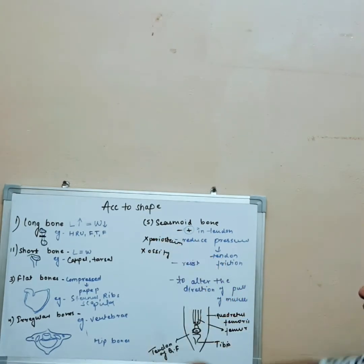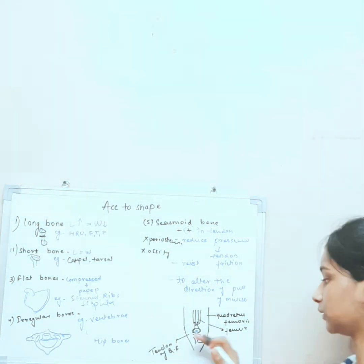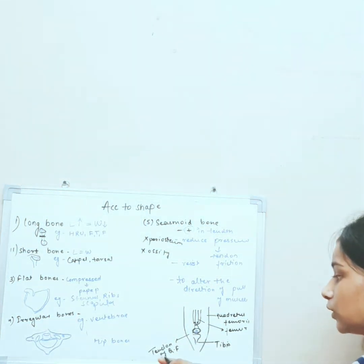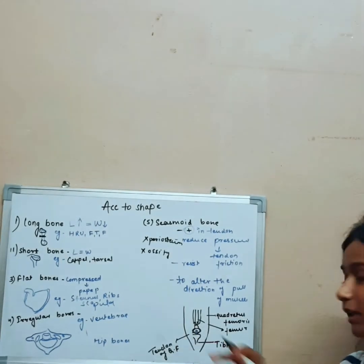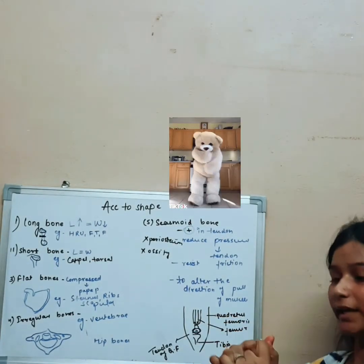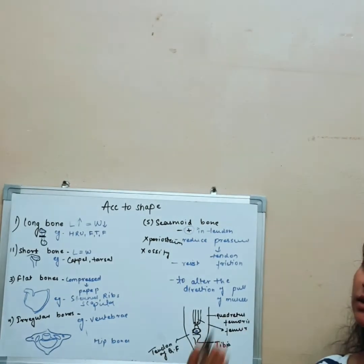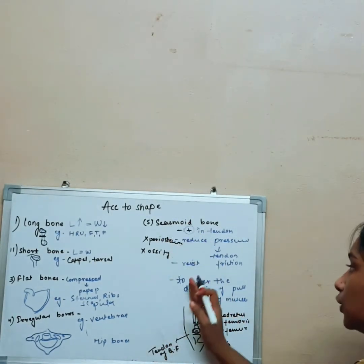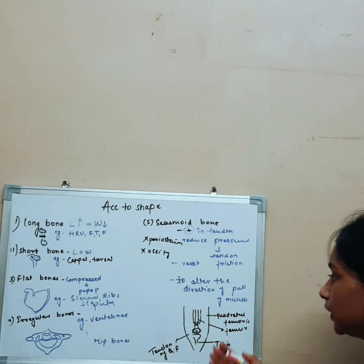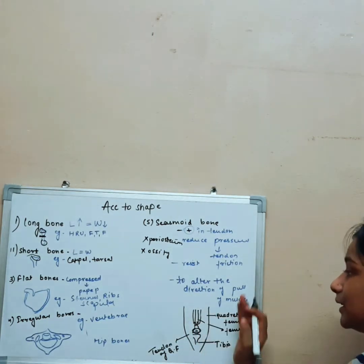As you know, the patella is present in the tendon of the quadriceps femoris. The patella has to move, so there must be something which can resist its pressure. For resistance of pressure, we have the synovial bursa or synovial cleft. It also acts in altering the direction of pull of the muscle.